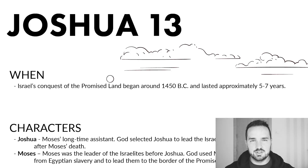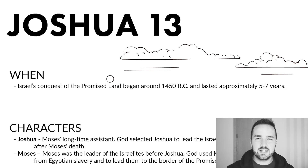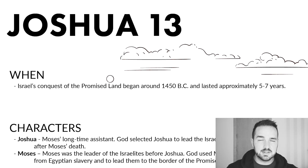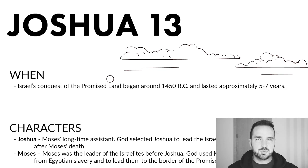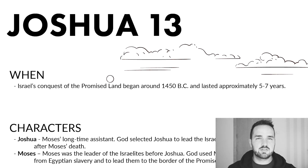We always answer the same questions, and we'll start off with the typical question: when? When in history did these events happen? We've been talking about the Israelites going into the promised land and conquering it. That process began in roughly 1450 BC, and it lasted anywhere between five to seven years.